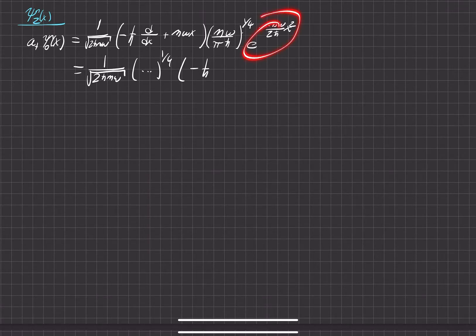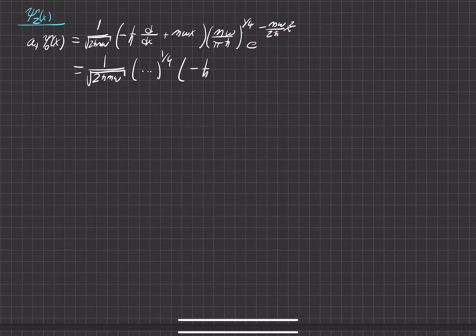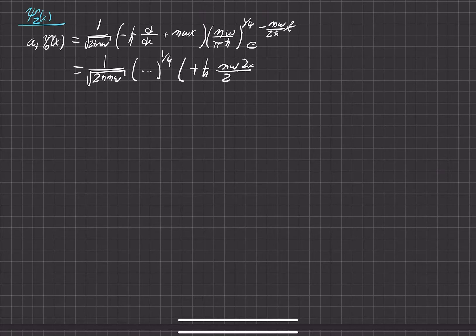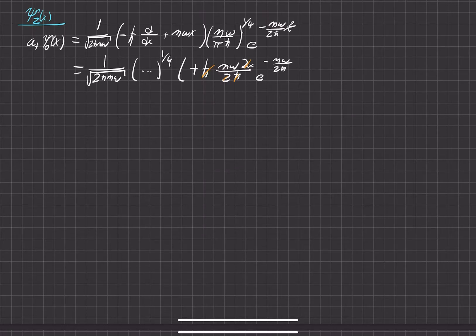Now we're going to distribute this portion to these two terms. The spatial derivative acts on this, and it's a negative so it turns into positive. The derivative of x squared is just 2x over 2, times h-bar. Before we move on, let's go ahead and cancel out the like terms.